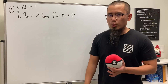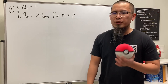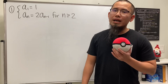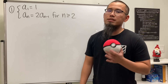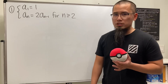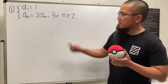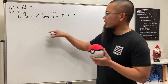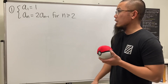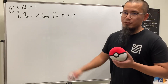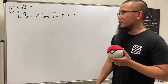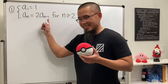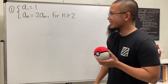I would like to show you guys a general strategy for figuring out a specific formula when we are given a sequence defined recursively. This is the first example. We can just write down the first couple of terms and look for a pattern, but we can actually utilize the following approach.